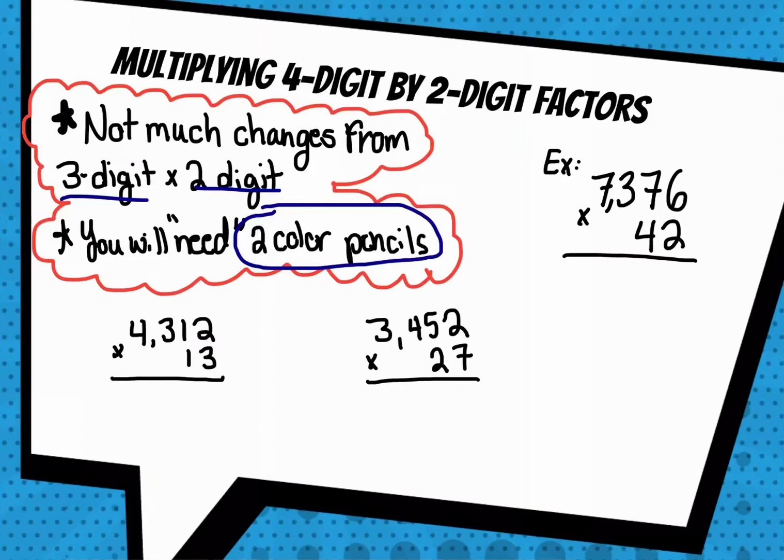Multiplying four digit by two digit factors is pretty similar to three digit by two digit. Just like three digit times two digit, you're going to need a colored pencil. You're going to need two of them actually. One for your tens place, one for your ones place.